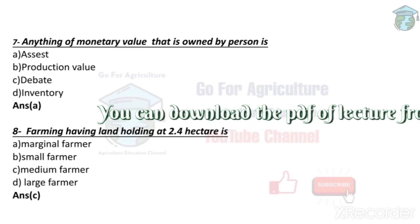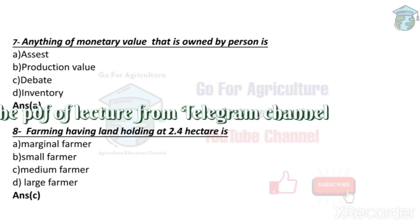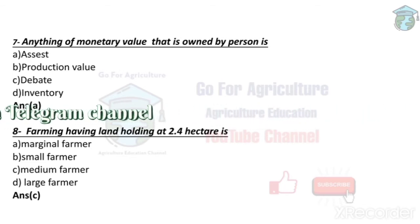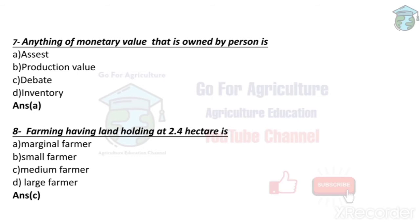Anything of monetary value that is owned by a person is called an asset. Basically, an asset can be any thing — a tractor, a laptop, a car, a bike — which has a monetary value. If you sell a tractor you get money, if you sell a laptop you get money. So any kind of thing on earth which has monetary value is called an asset. Land and machinery are also assets.